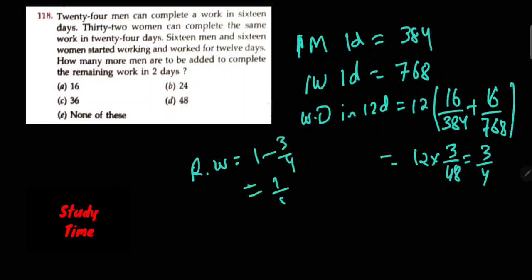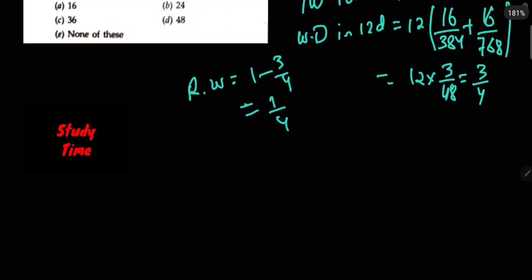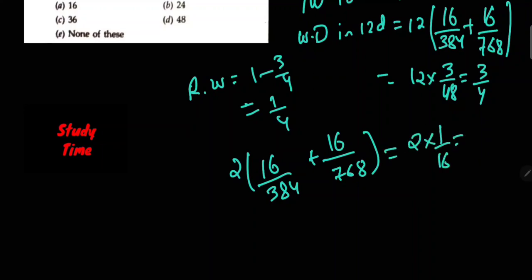For the remaining 1/4: 2 × (x men/384 + 16 women/768). Two times 1/384... we get 1/192, and we need to solve for x.